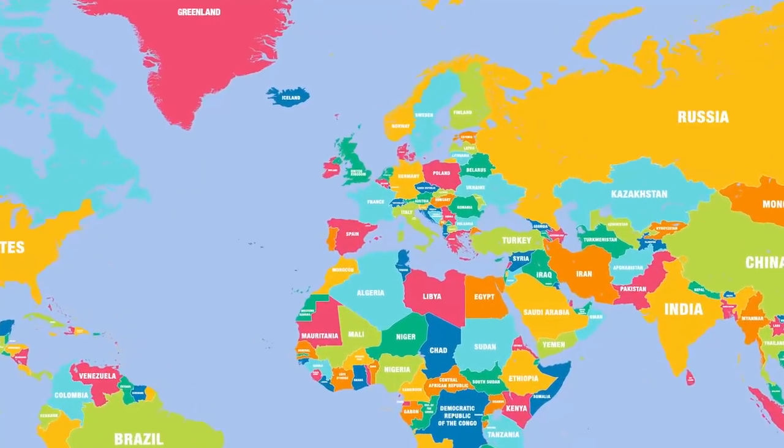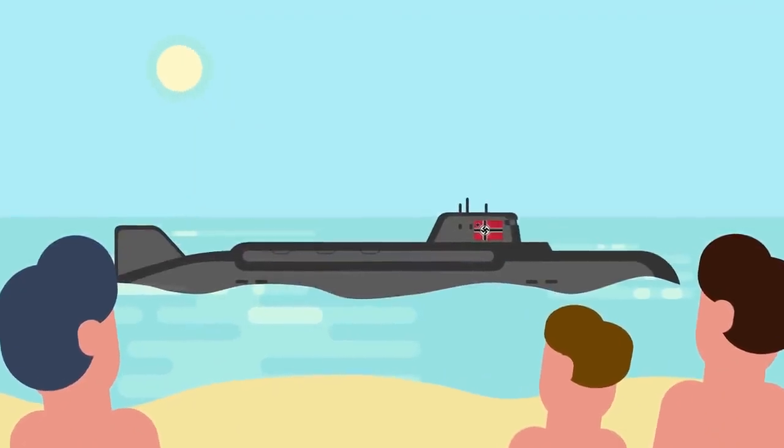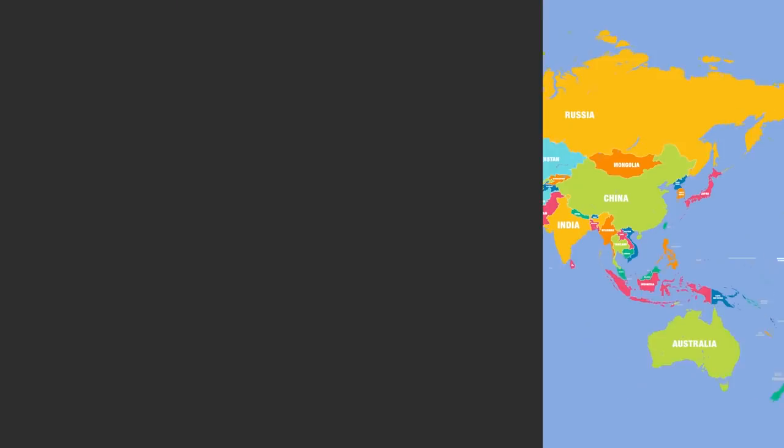26. After the end of World War I, a German submarine washed up onto a beach in Hastings, England.